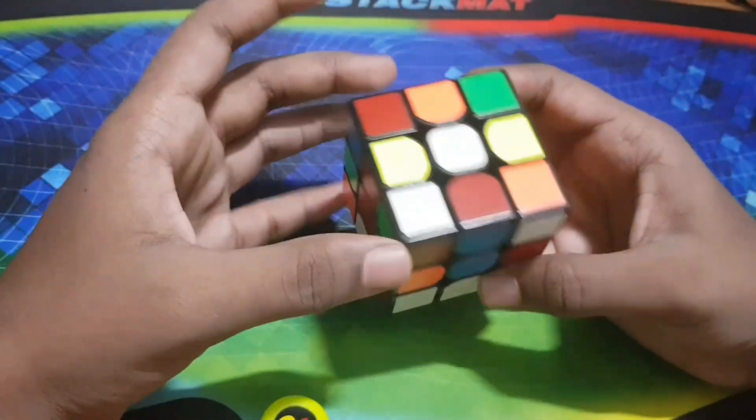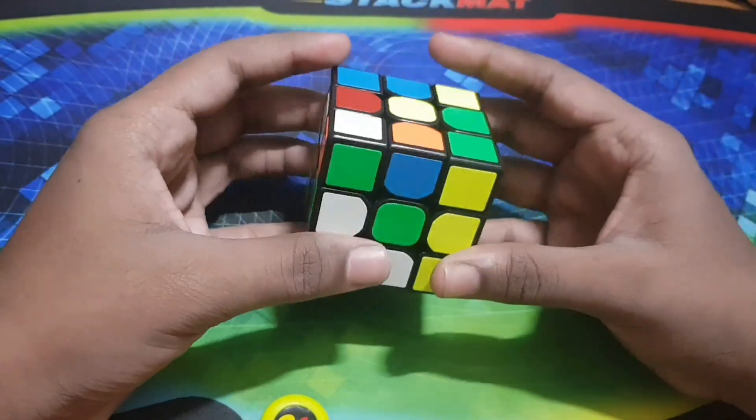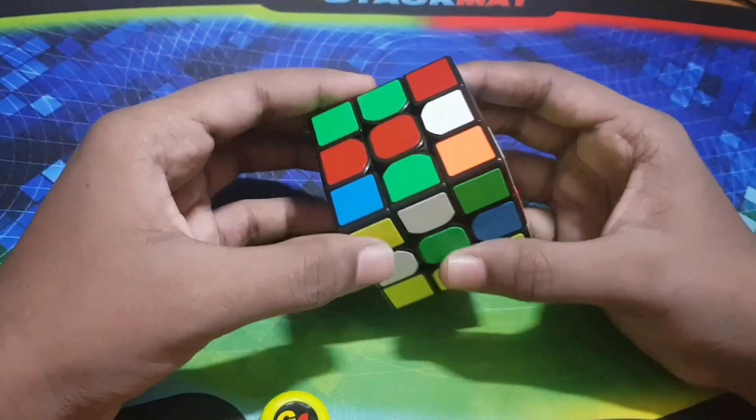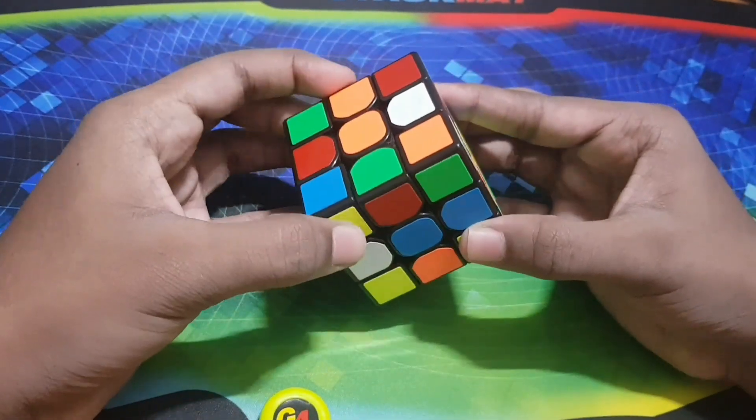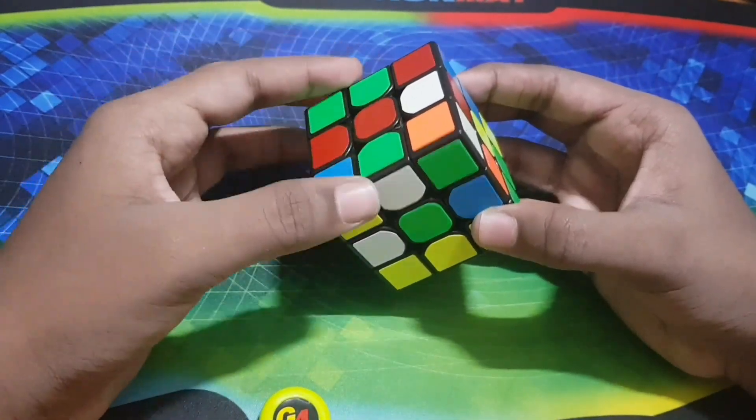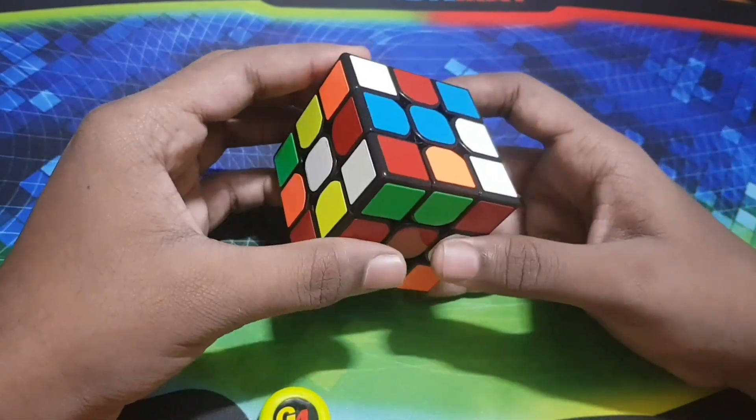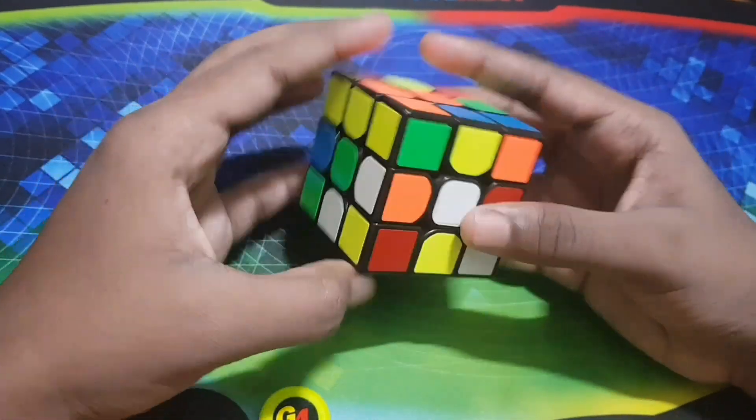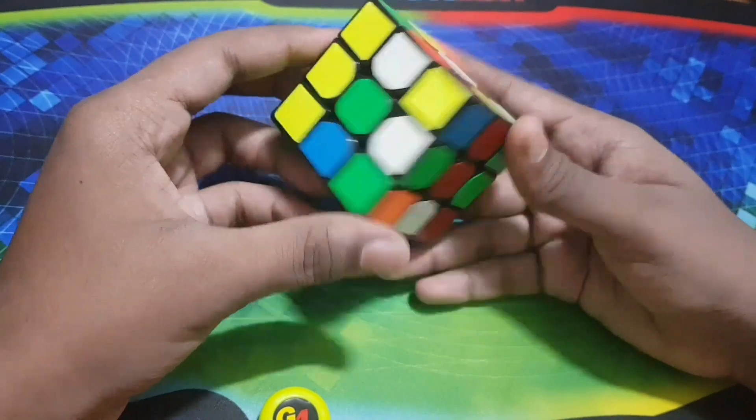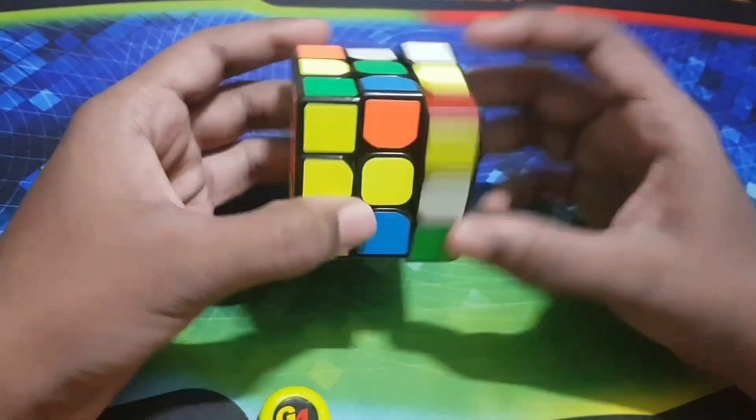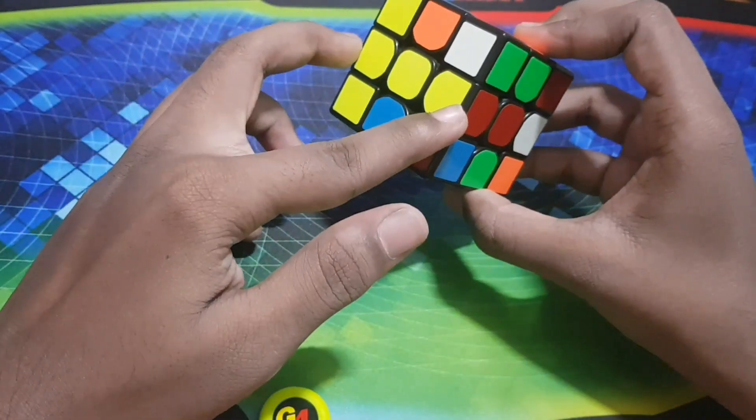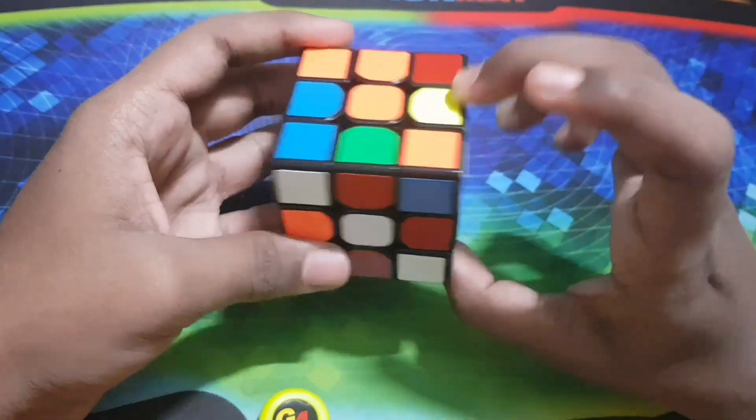So let's try to solve it. We have the cube scrambled. As I said, the first step is to solve all the edges in the central layer. I'll be doing the yellow color because it's quite easy and you get these both solved.